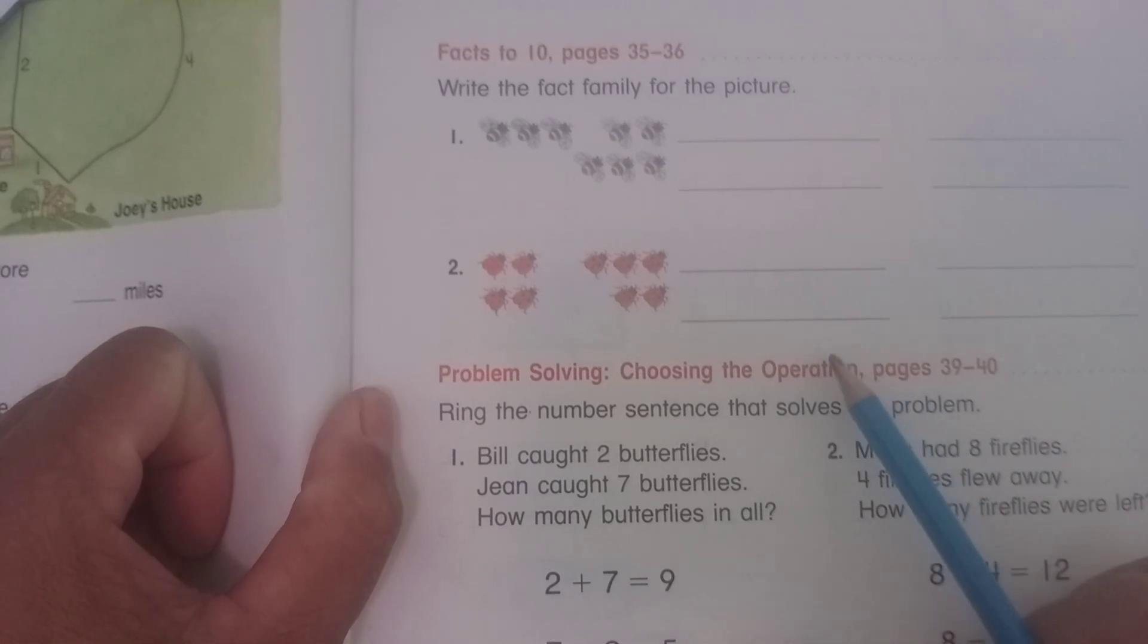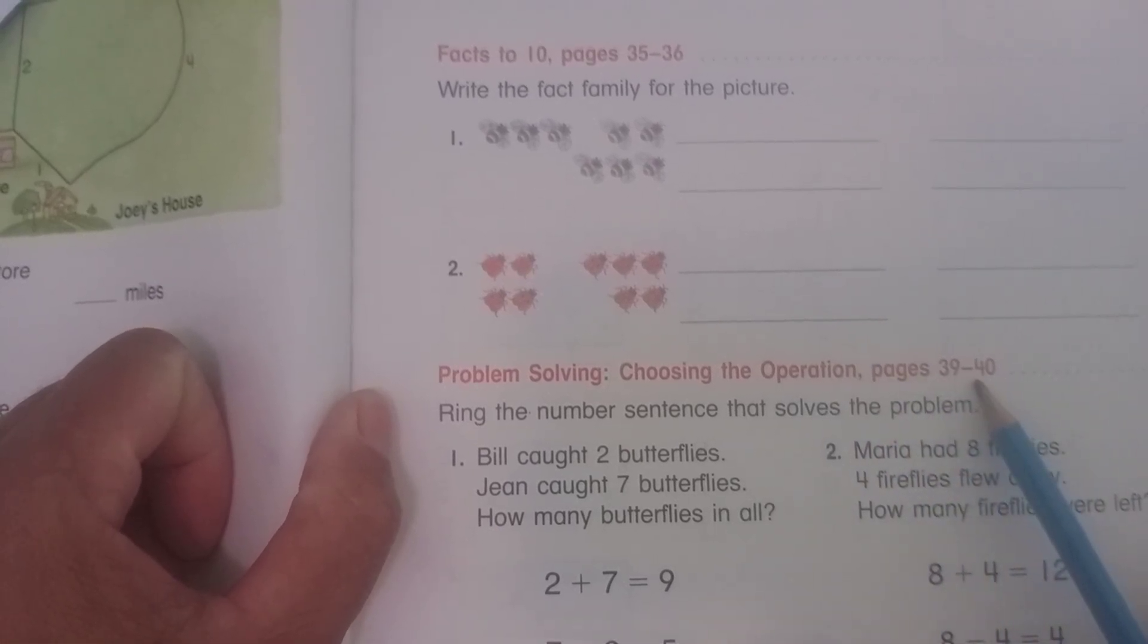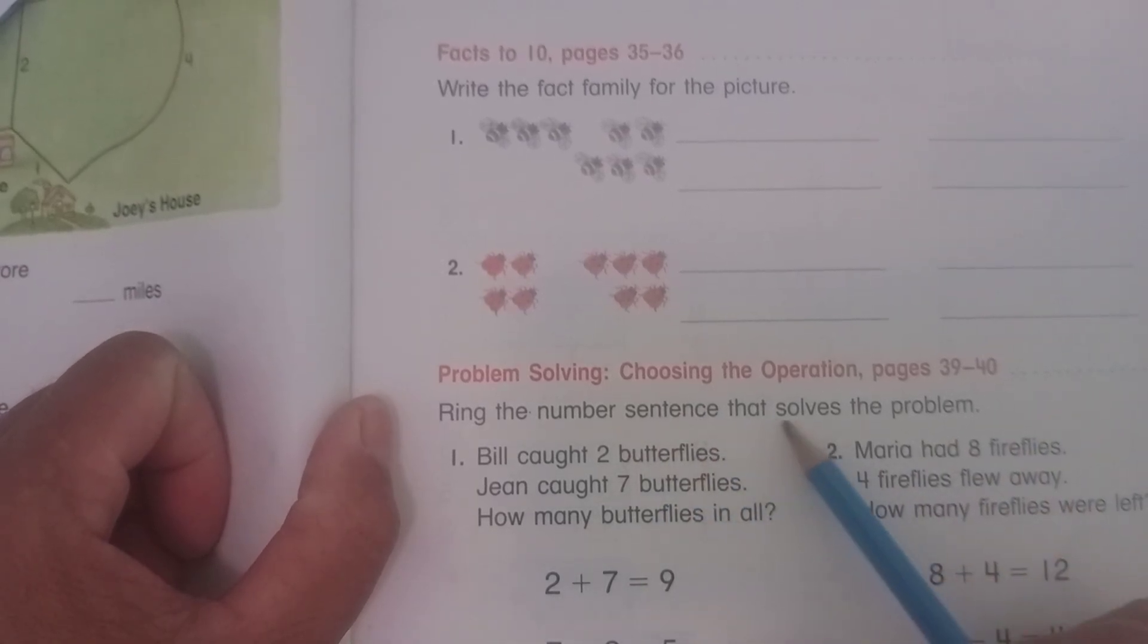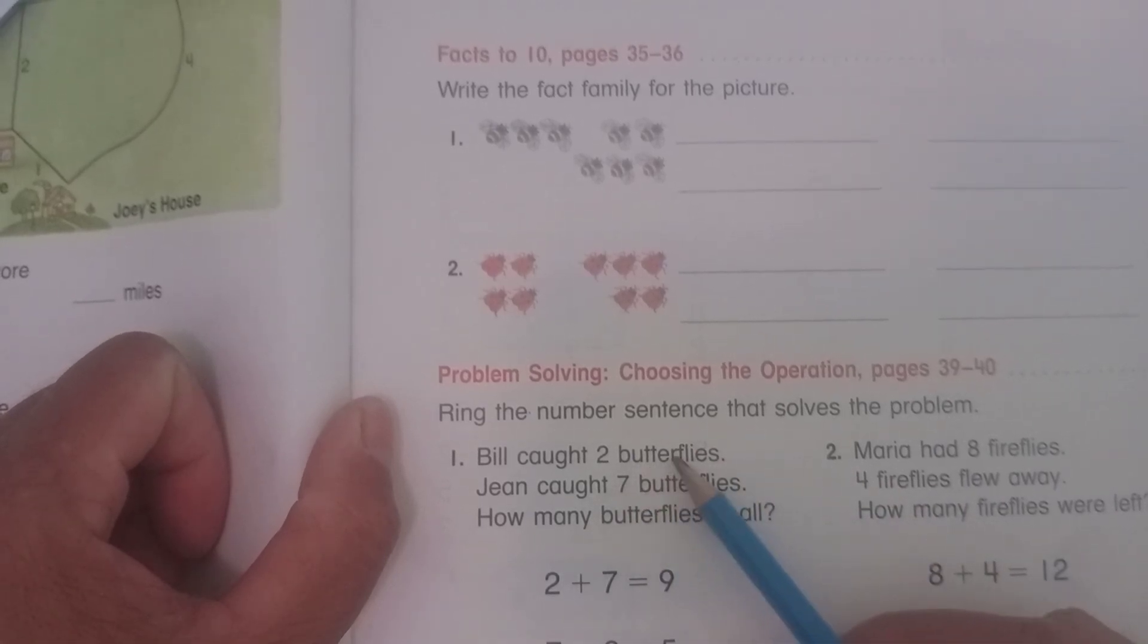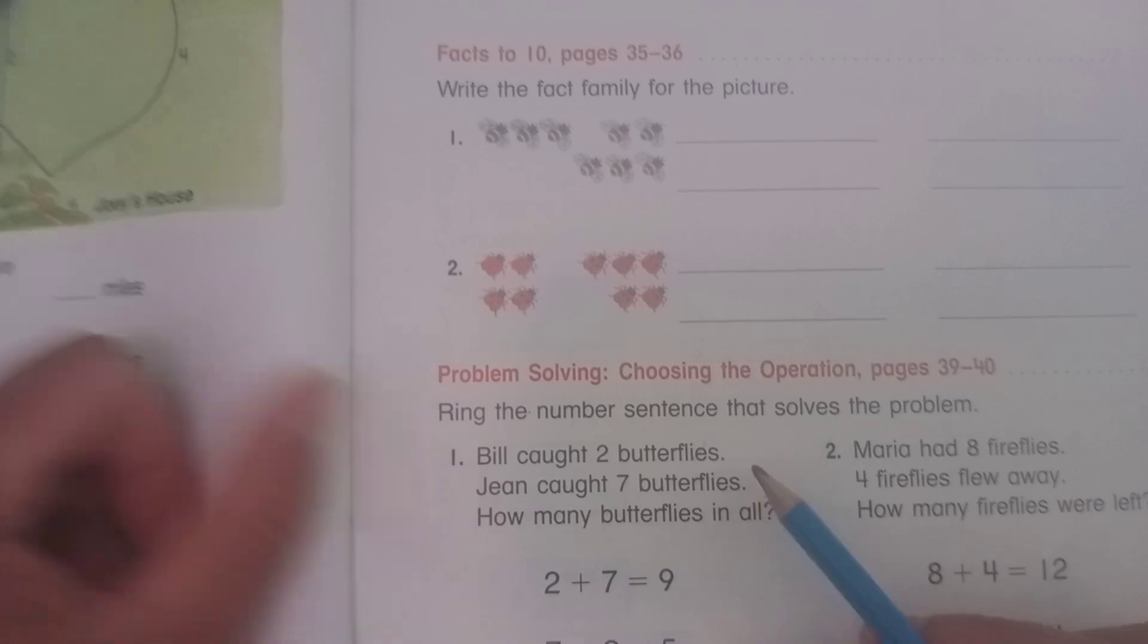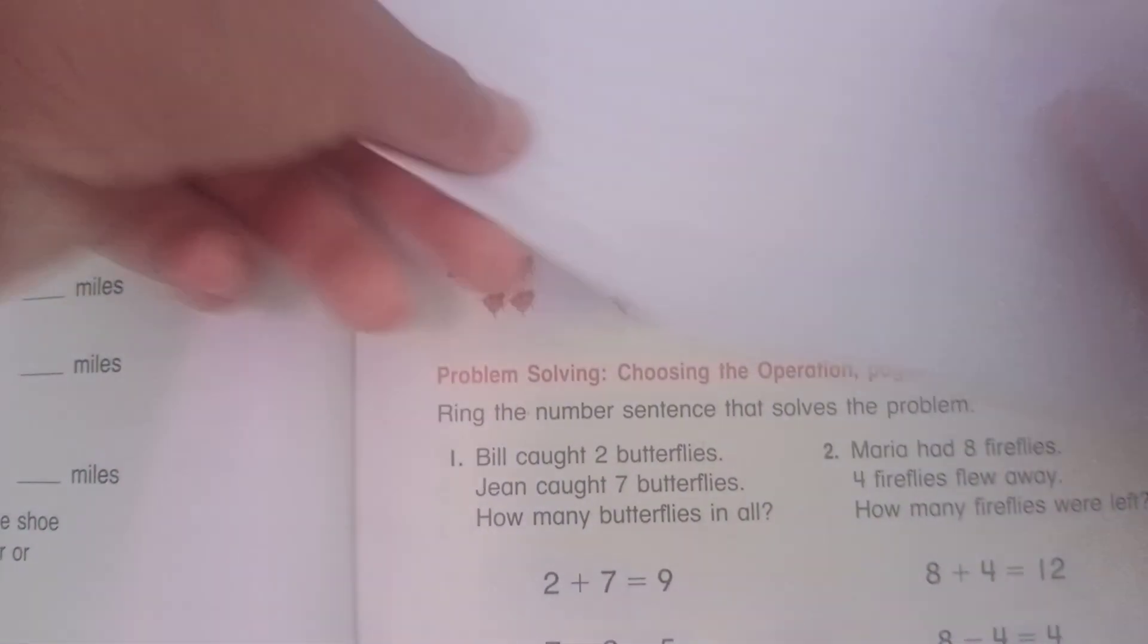Choosing the operation, page 39 to 40. Reading the numbers and sentence that solve the problem. Number one: Bill caught 2 butterflies, and Jean caught 7 butterflies. How many butterflies in all? So you can write about this size, like this.